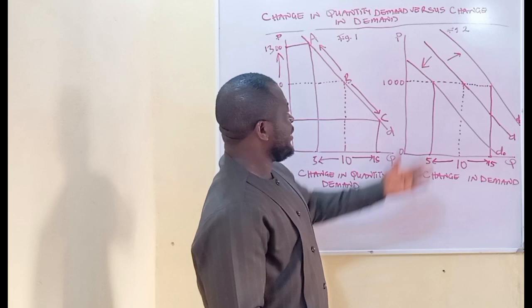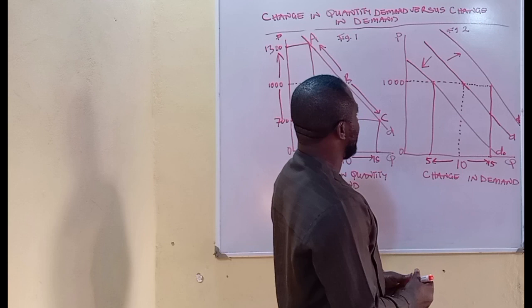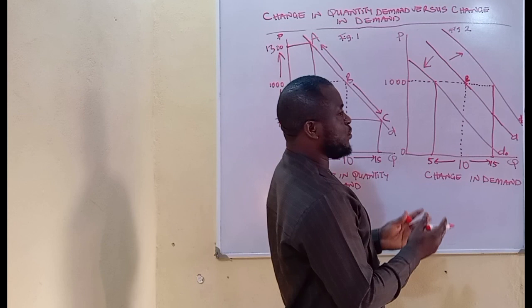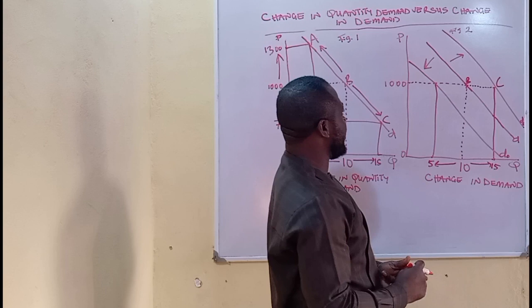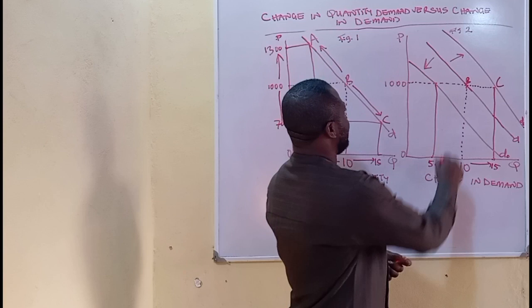Let us equally represent the various points on this graph the way we represented change in quantity demand. The initial position of Mr. John, when his salary was 100,000 Naira and the price of a carton was 1,000 Naira, is represented as point B. As a result of an increase in his monthly income, Mr. John increased his consumption from 10 to 15 cartons, represented as point C. While a decrease in monthly income from 100,000 to 70,000 Naira caused Mr. John to reduce consumption from 10 to 5 cartons, resulting in a leftward shift from point B to point A.